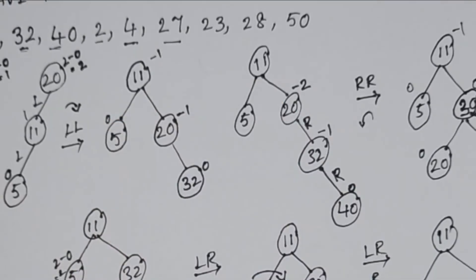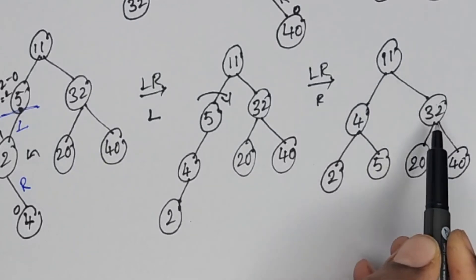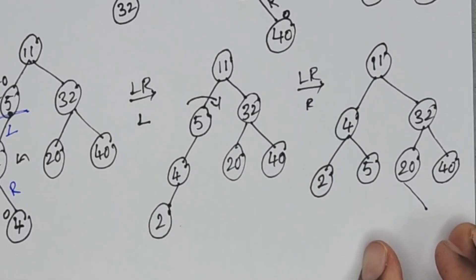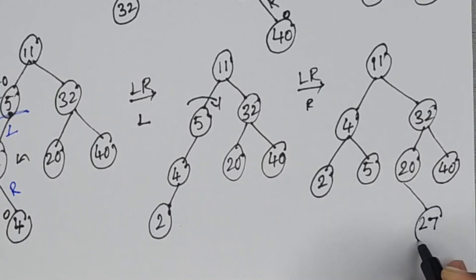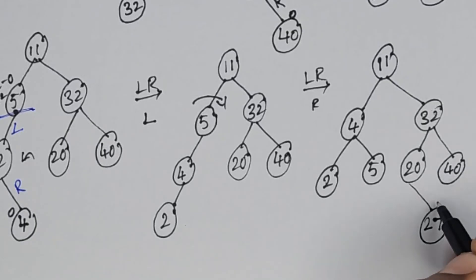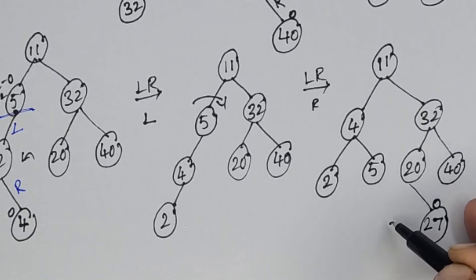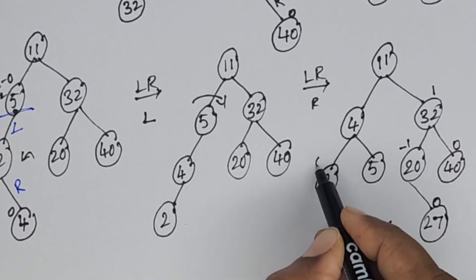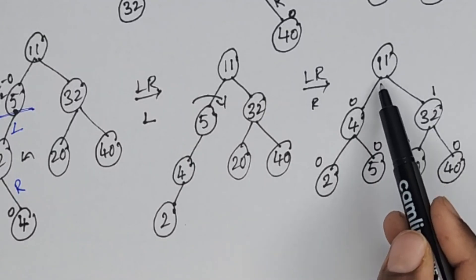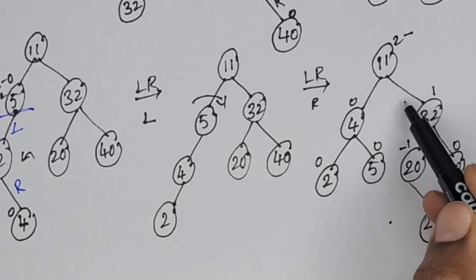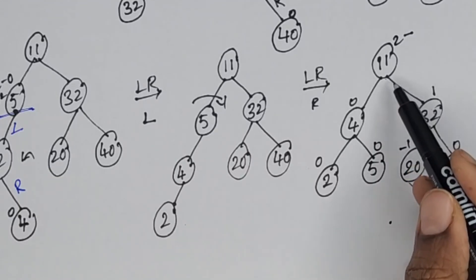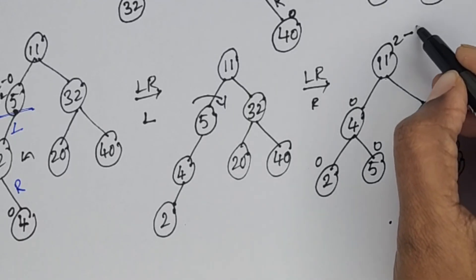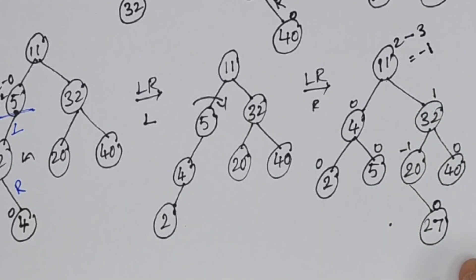Now I am going to add the next element, 27. Since 27 is greater than 11, less than 32, and greater than 20, we insert 27 to the right of 20. The balance factors are 0, -1, 0, 1, 0, 0, 0. For node 11, the right subtree height — taking the longest path from 11 to 40 (height 2) versus 11 to 27 (height 3) — gives 2 minus 3 = -1. So the tree remains balanced.